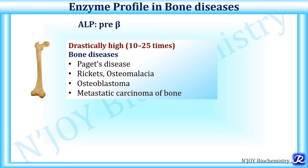In bone disease, there are six isoenzymes of alkaline phosphatase, of which the pre-beta isoenzyme is most relevant. Drastically high levels of 10 to 15 times the upper normal limit are seen in various bone diseases like Paget's disease, rickets, osteomalacia, osteoblastoma, and metastatic carcinoma of bone.